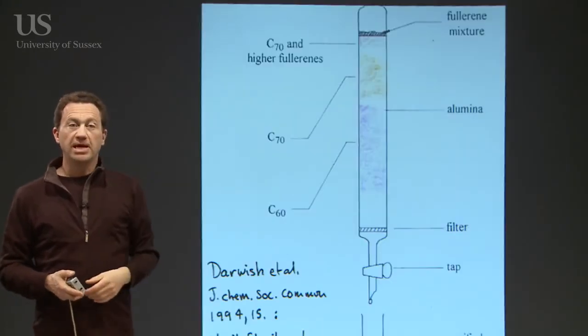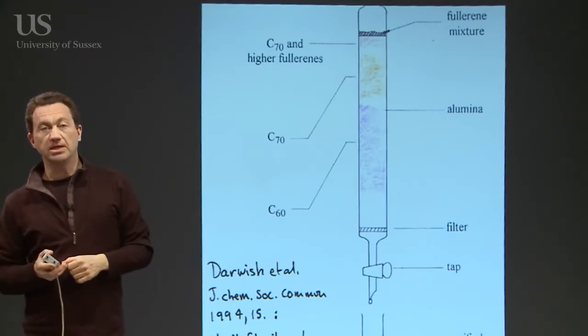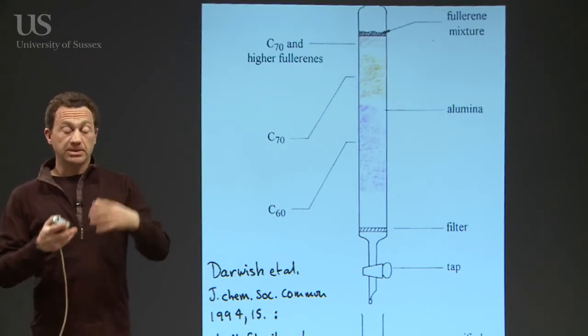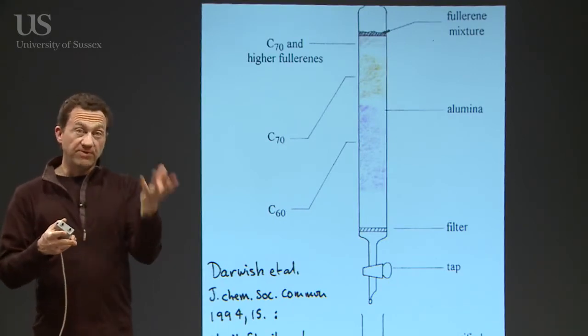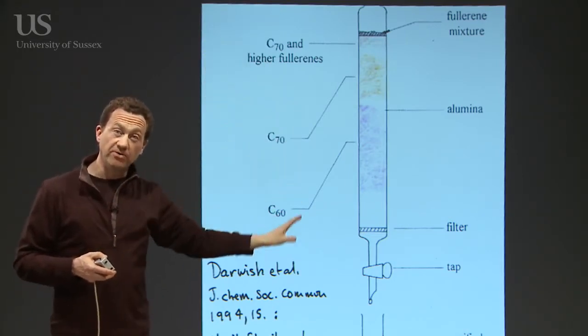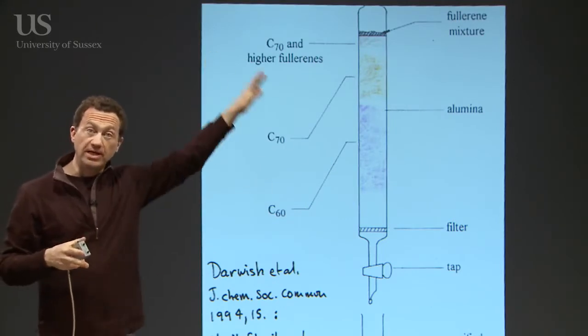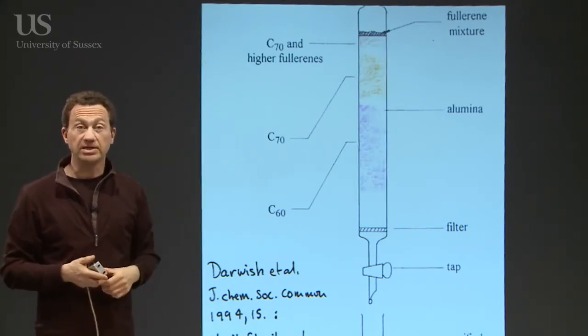What comes out first from the column is C60, which is a beautiful magenta color when it's dissolved in toluene. This comes out and of course then you can evaporate that and get crystals and you've got pure C60. Then later on you get a red color coming through which is C70, which is like a rugby ball. And actually if you keep on going through, you can get other size fullerenes from that.